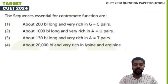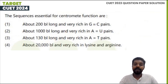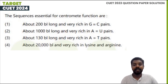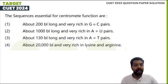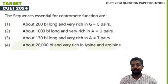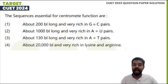The sequence essential for centromere function. The options are: about 200 base pairs long and very rich in GC pairs; about 1000 base pairs long and very rich in AT pairs; about 130 base pairs long and very rich in AT pairs; about 20,000 base pairs long and very rich in lysine and arginine.